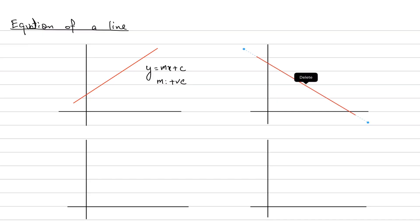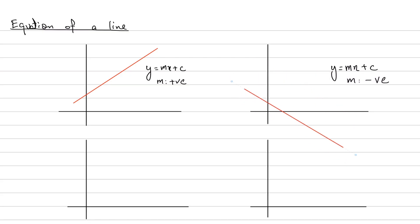If you have a negatively sloping line, it will also have an equation that looks like y = mx + c, but the gradient m will be negative. If you drag this line up and down the y-intercept can change from positive to negative, but the gradient will always be negative.